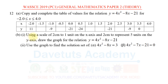Further to that, we are to use a scale of 2 cm to 1 unit on the x-axis and 2 cm to represent 5 units on the y-axis to draw the graph of y = 4x² - 8x - 21. The scale we have been given goes a long way to simplify the question for us — we just know the scale and abide by it. But then part B2 is going to be quite interesting.